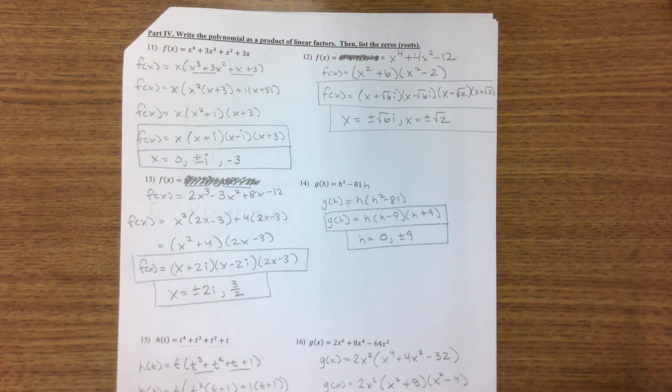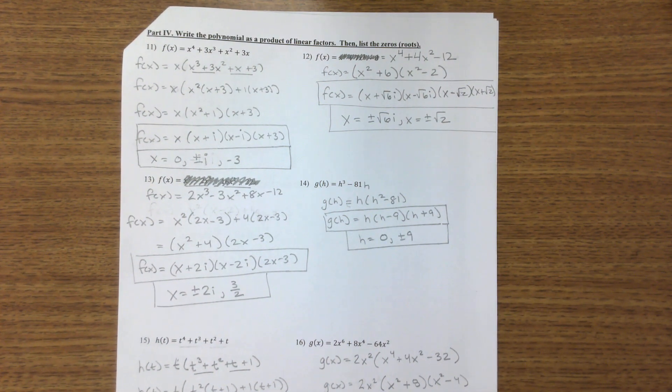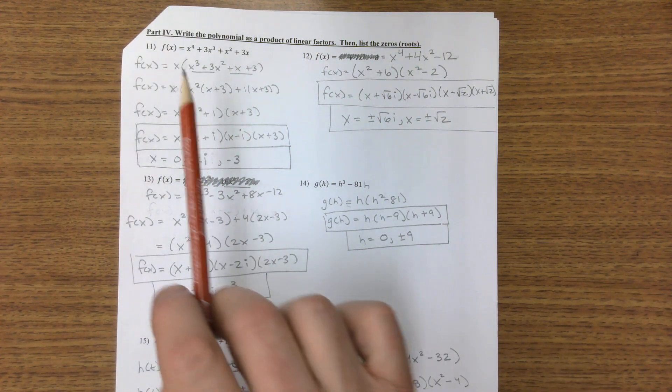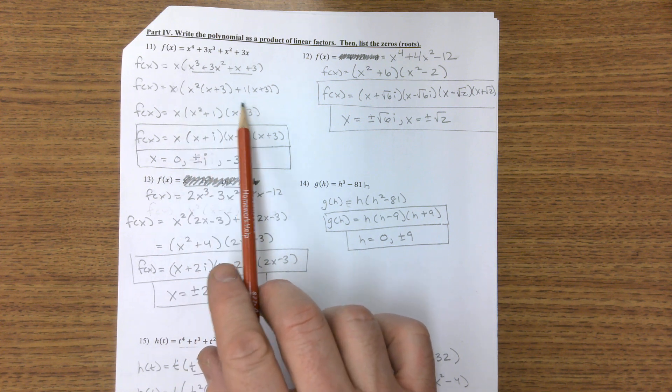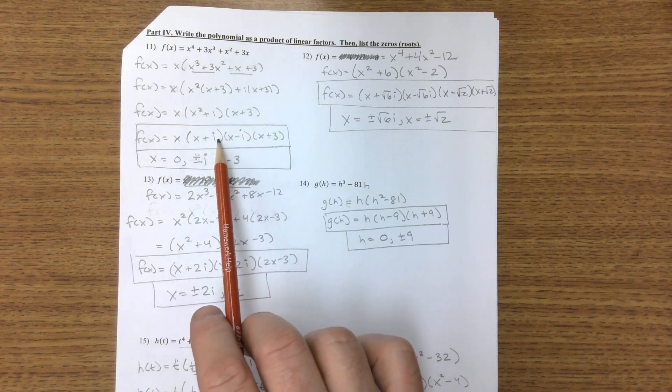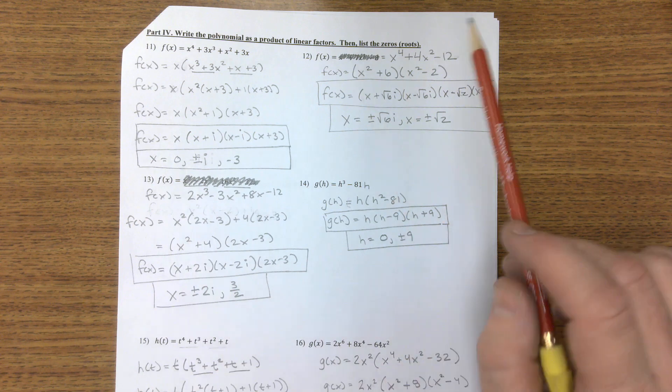Alright, on page two, a lot of factoring here going on. I factor out an x and I factor it by grouping, and I have these three terms. This one can get split up this way, and there's my solutions. On 12,